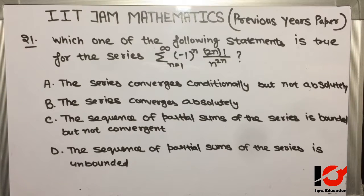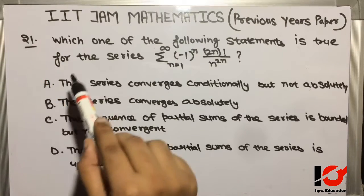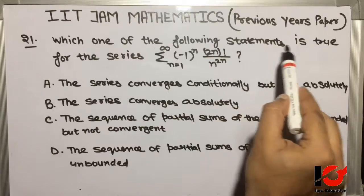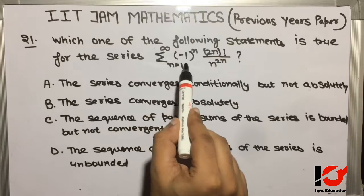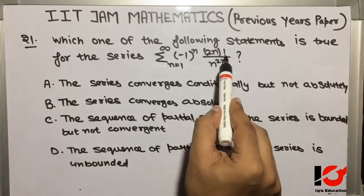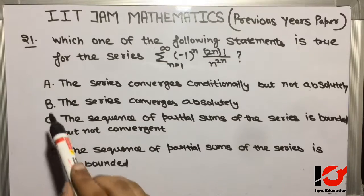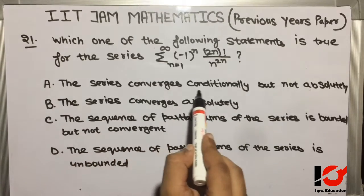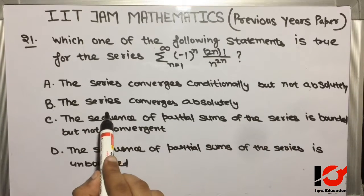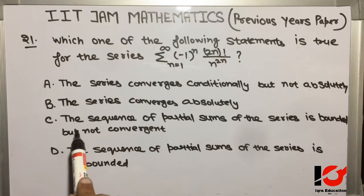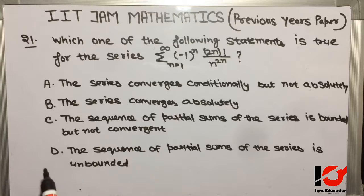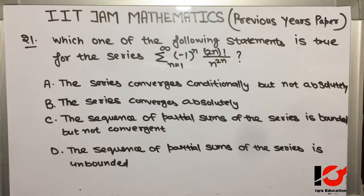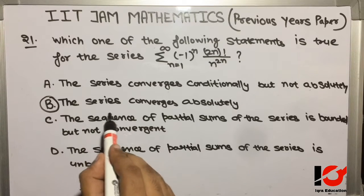Hello everyone, hope you have a wonderful day. Question 21: Which one of the following statements is true for the series summation from n=1 to infinity of (-1)^n * n! / n^(2n)? Option A: converges conditionally but not absolutely. Option B: converges absolutely. Option C: sequence of partial sums is bounded but not convergent. Option D: sequence of partial sums is unbounded. The answer is Option B — the series converges absolutely.